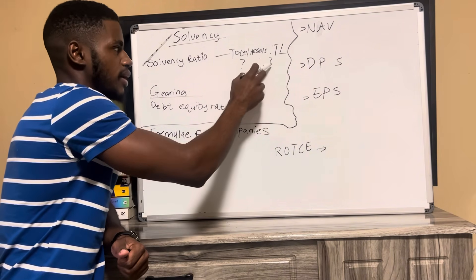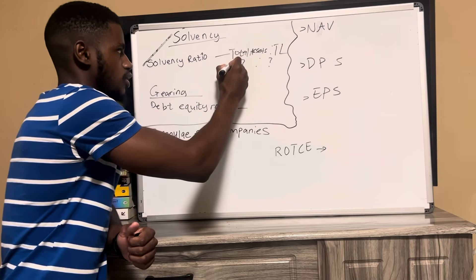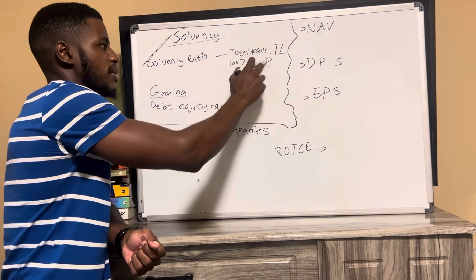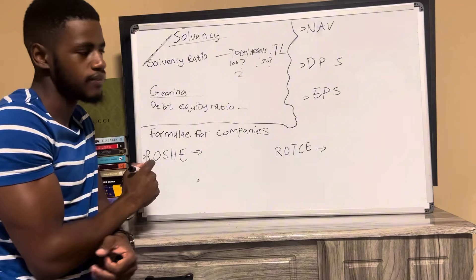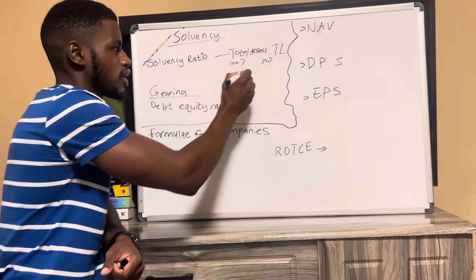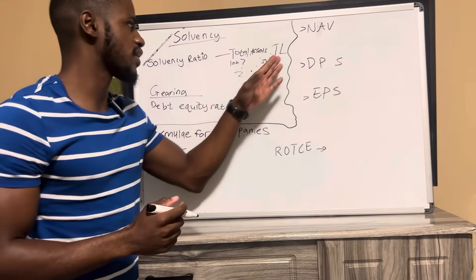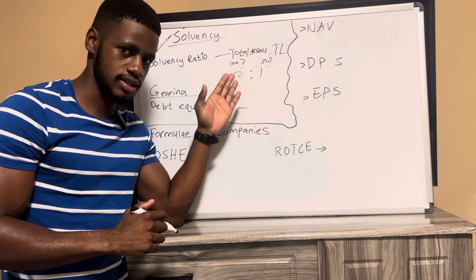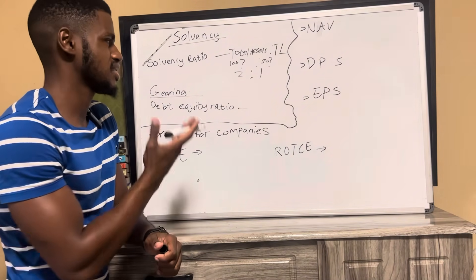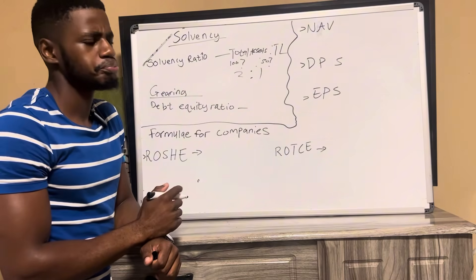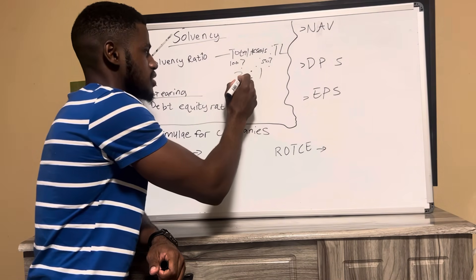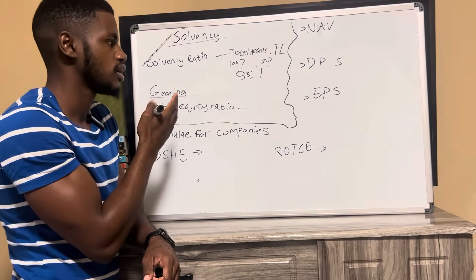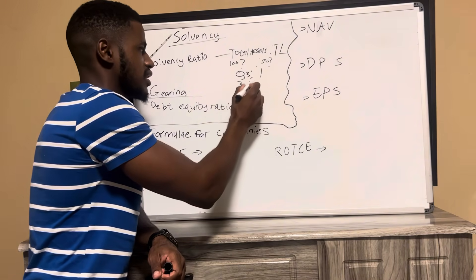This divided by this gives us an answer. Let's say assets are 100 and liabilities are 50 — 100 divided by 50 gives us 2, so the answer is 2:1. That means for every one liability we have two assets, which is a good position. We do not want our total assets to be less than our total liabilities.